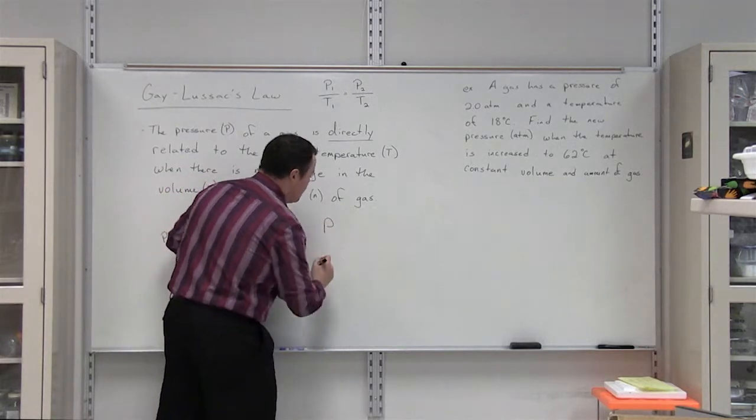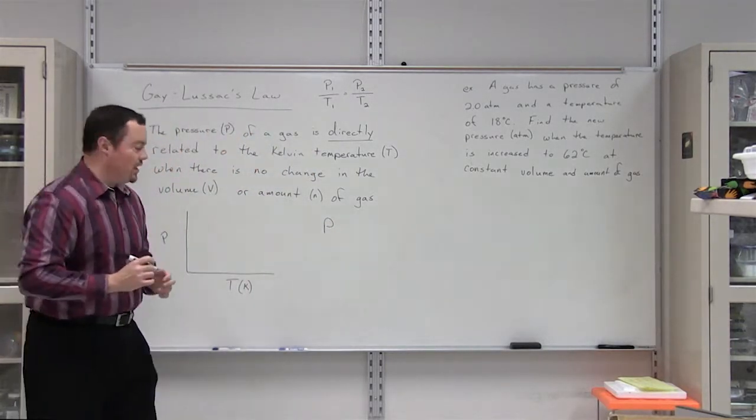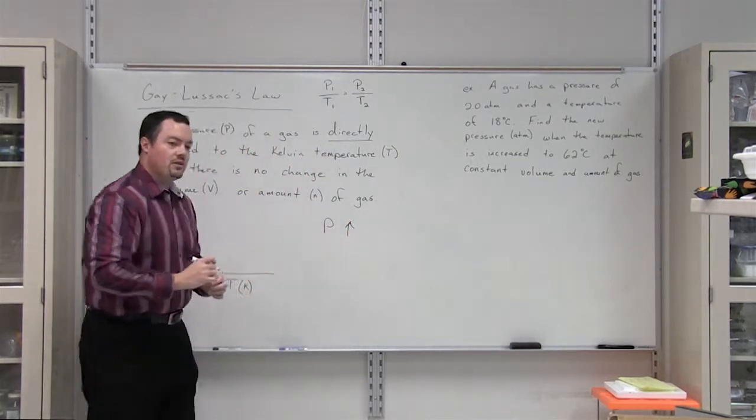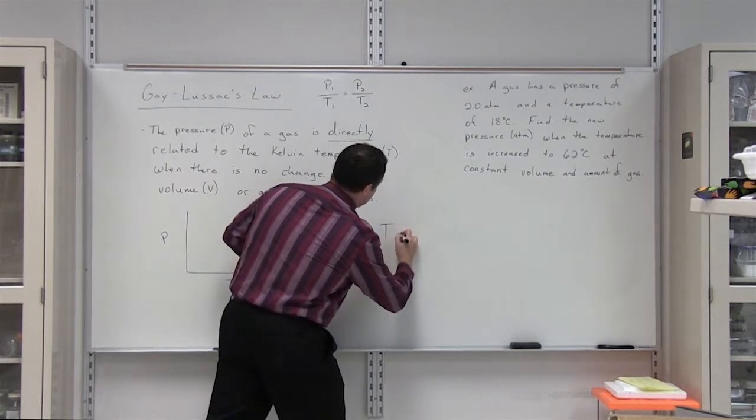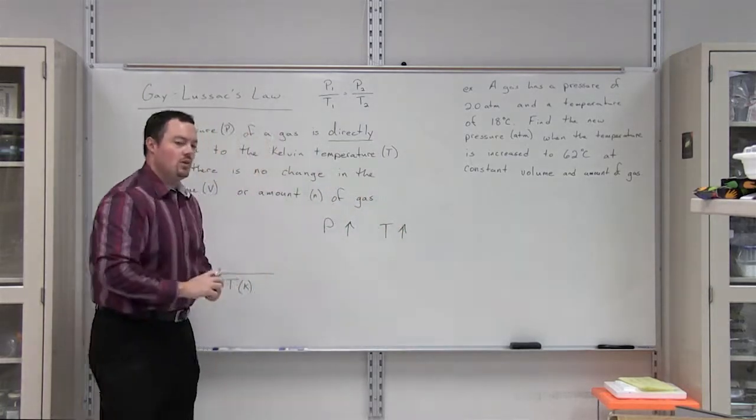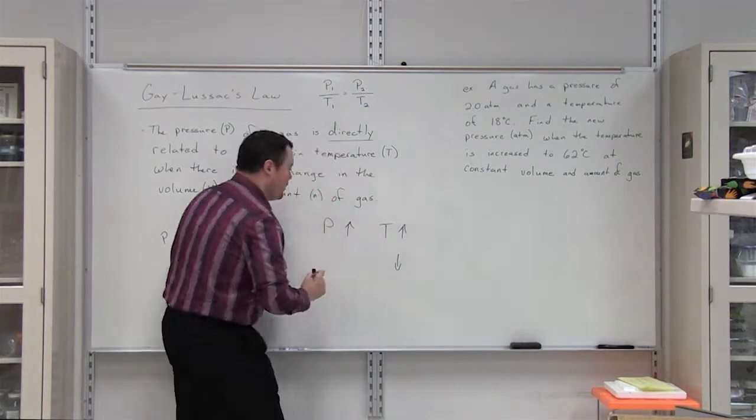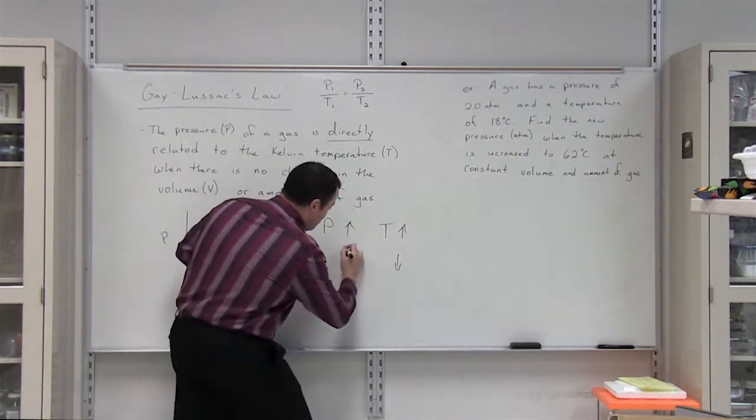What do we mean when we have a direct relationship? That means that whenever pressure increases, temperature will also increase. If we decrease temperature, then we would expect pressure to also decrease.